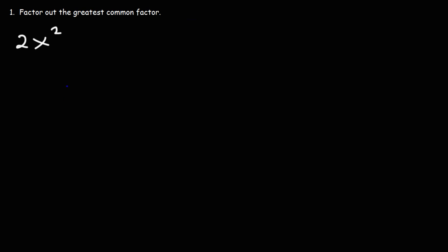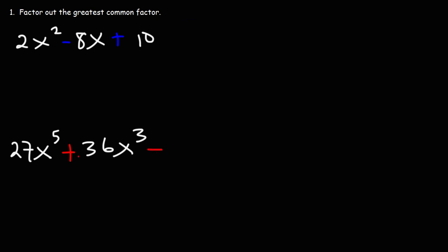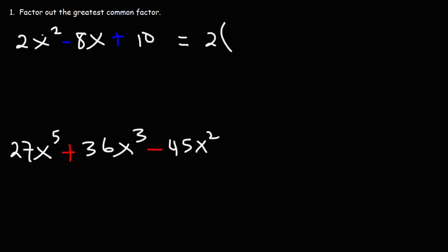Now let's move on to the next example. Try these two problems: 2x squared minus 8x plus 10, and also 27x to the 5th power plus 36x cubed minus 45x squared. Go ahead and factor these expressions by pulling out the GCF. For the first one, we have a trinomial with three terms. We can take out a 2, since all of the coefficients are divisible by 2. 2x squared divided by 2 is x squared. Negative 8x divided by 2 is negative 4x. And 10 divided by 2 is 5.